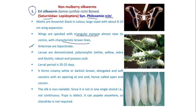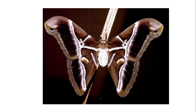The moth also possesses bipectinate antennae. Larvae are domesticated, polymorphic, robust, and possess scoli — spine-like structures known as scoli. The larval period is 20 to 25 days. It forms creamy white or dark brown, elongated and soft cocoons with an opening at one end — hence called an opening cocoon. The silk is non-reelable, meaning it is not in a single continuous strand. The pupa is obtect type and can pupate anywhere, so a chandrika is not required.